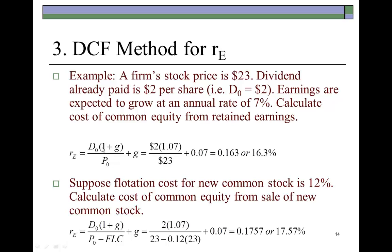So we need to know what the current dividend is, what the growth rate is, and what the current stock price is. And then with those, in this example, we find the firm's cost of common equity to be 16.3%.